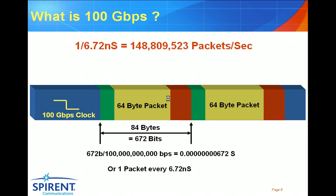Finally, we hit the new frontier: 100 gig. At this speed, things are moving at an incredibly fast pace. One packet is being transmitted every 6.72 nanoseconds, and we're moving 148,809,523 packets every second. We're going to need extremely tight resolutions in terms of timing to record this protocol accurately.